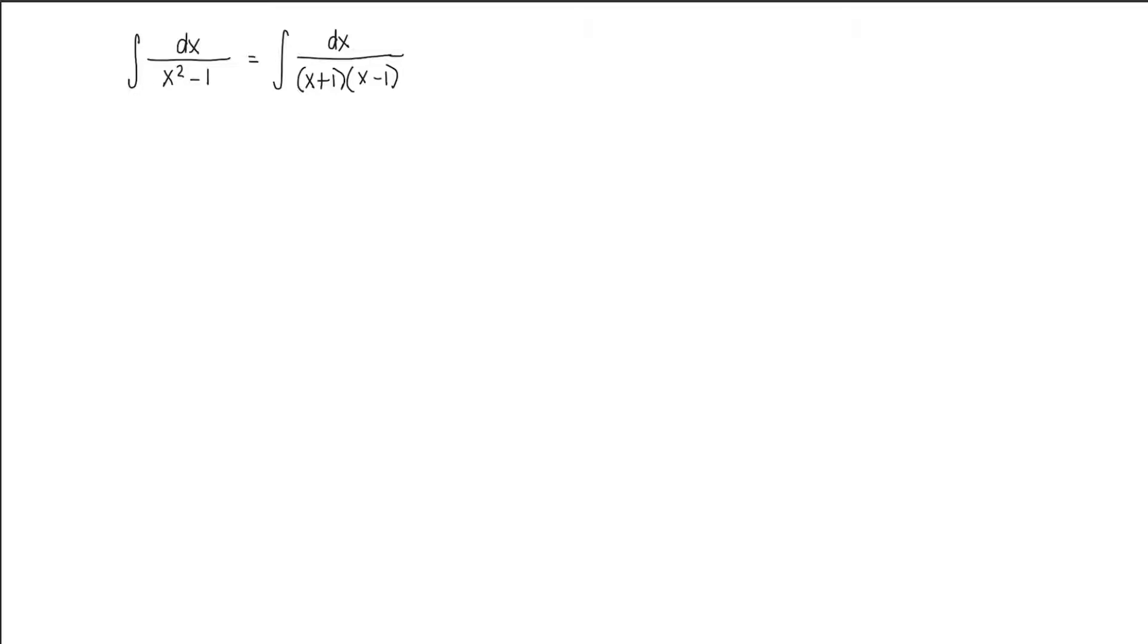Now, we have linear factors in the denominator, and there are two, meaning these two linear factors here correspond to two partial fractions in the form a over x plus 1 plus b over x minus 1 dx. So take note that we have two partial fractions here. If we just know the values of a and b, then these will already be integrable.